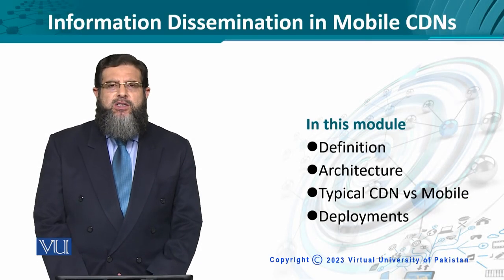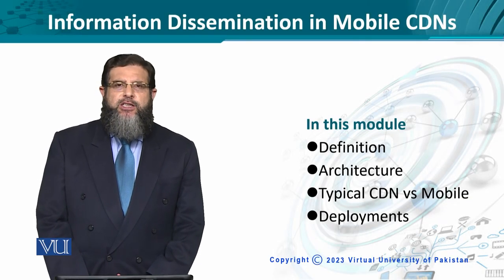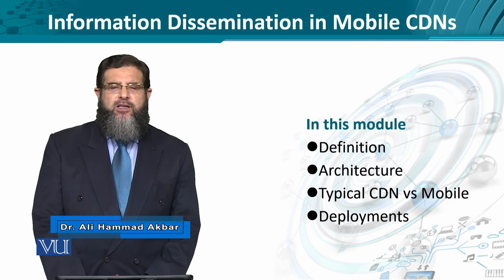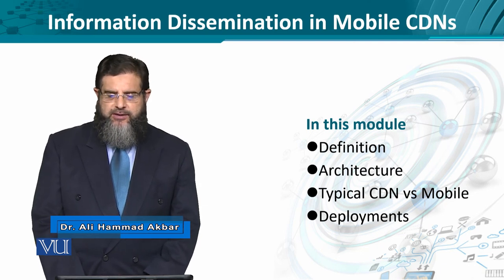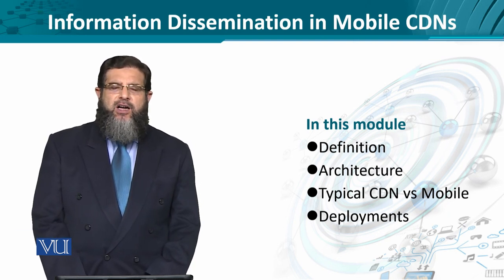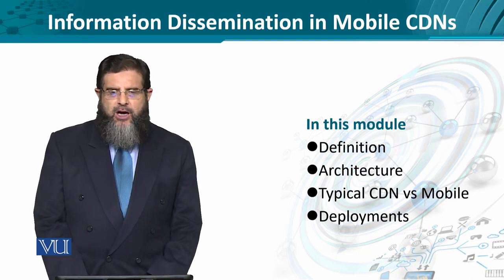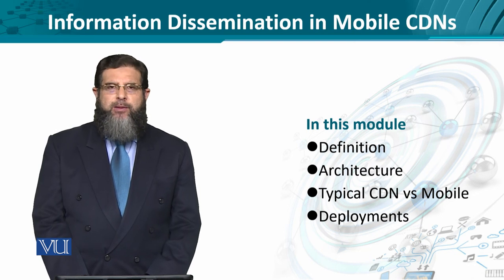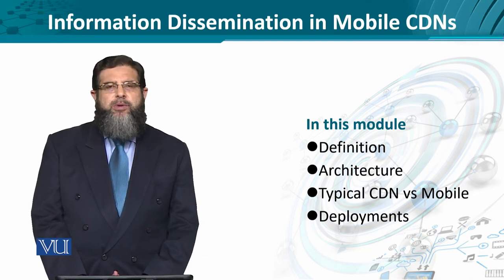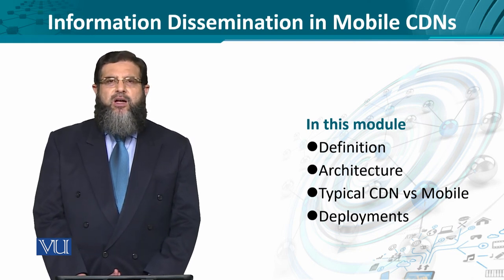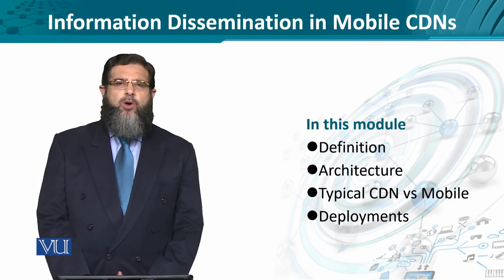Content delivery networks are assumed to be mostly situated close to the core, primarily residing in the data center. But for new users who access these content delivery networks through mobile, they are more interested in getting services which are more mindful of their constraints in mobile environments. The information dissemination or object sharing distribution in mobile CDNs is an important concern.